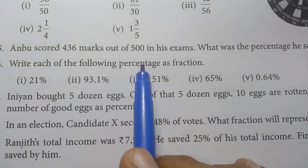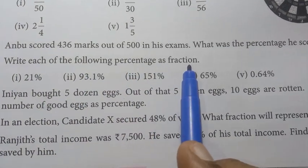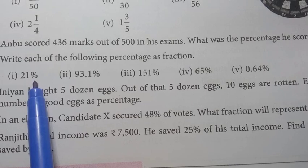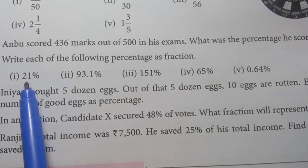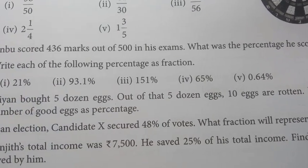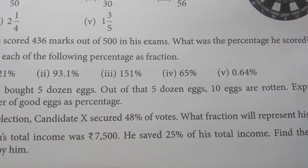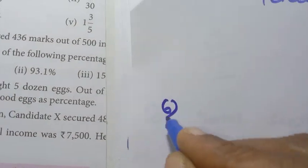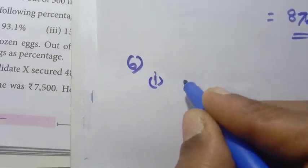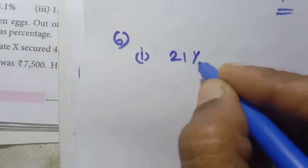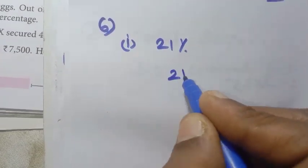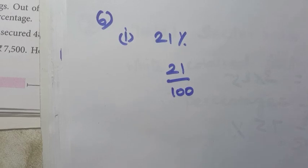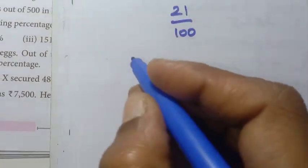Write each of the following percentages as a fraction. This percentage is a fraction. You will see 21 percentage. So this is a fraction — you will convert the percentage. 21 percentage. How do you write as a fraction? 21 by 100.